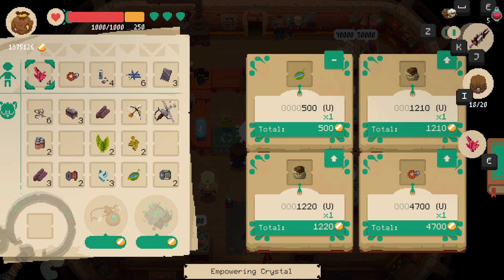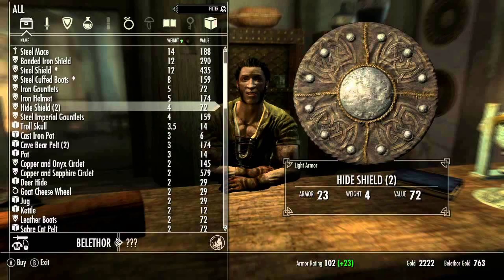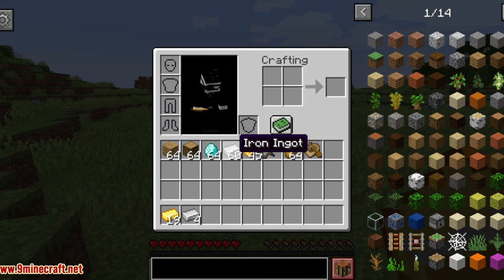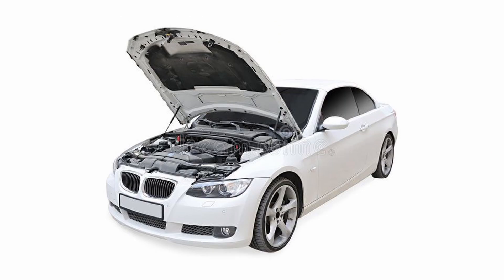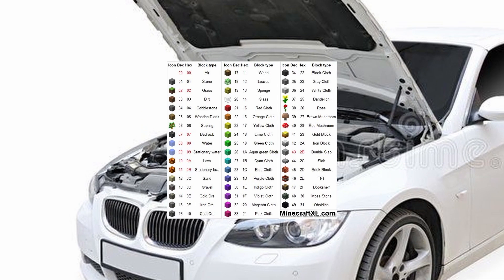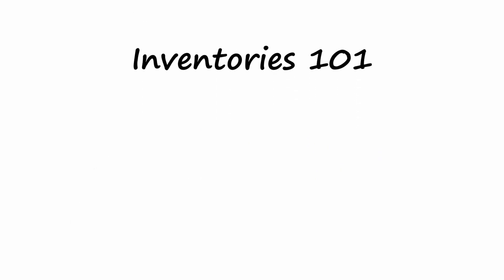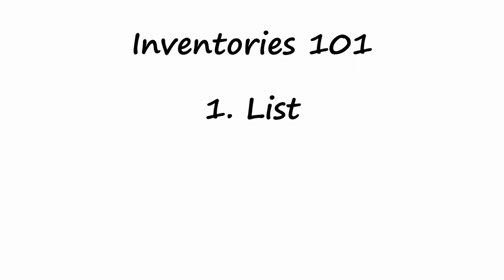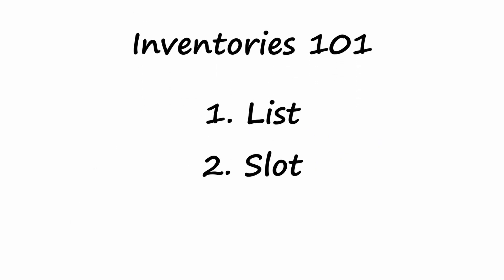When you think of an inventory system, you probably think of this, or this, or maybe this. But this is a lie. Under the hood, inventory systems are essentially just a list of items. The entire system can be broken down into three basic components: the item list, the item slot, and the item.